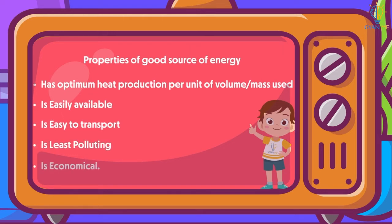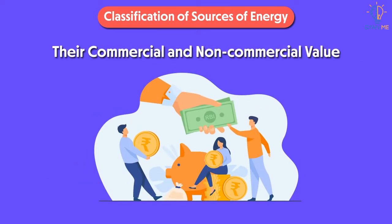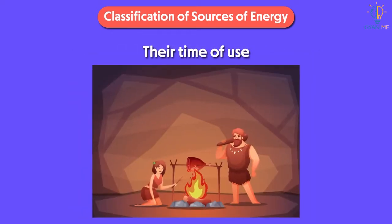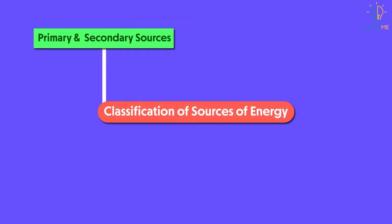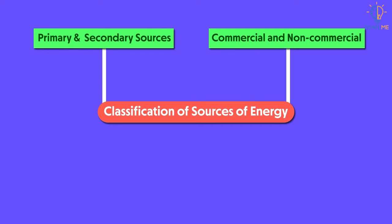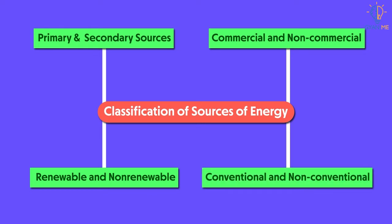So now, after learning so much about sources of energy, let us classify these sources into various types. The sources of energy can be classified according to different criteria like their source, their commercial and non-commercial value, their renewability, and their time of use. Accordingly, the sources of energy can be classified as primary and secondary based on their source; commercial and non-commercial based on their monetary value and availability; renewable and non-renewable based on the renewability time; and conventional and non-conventional based on the time of use.